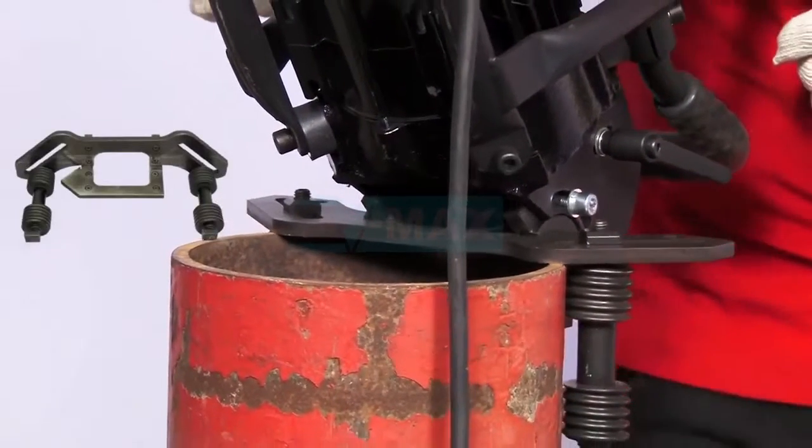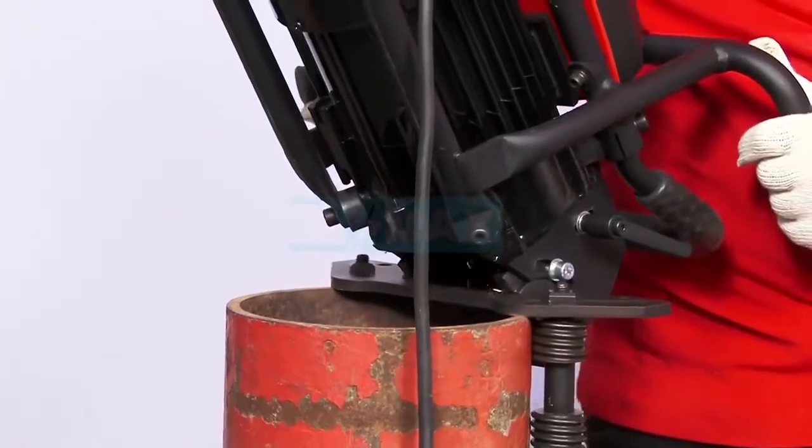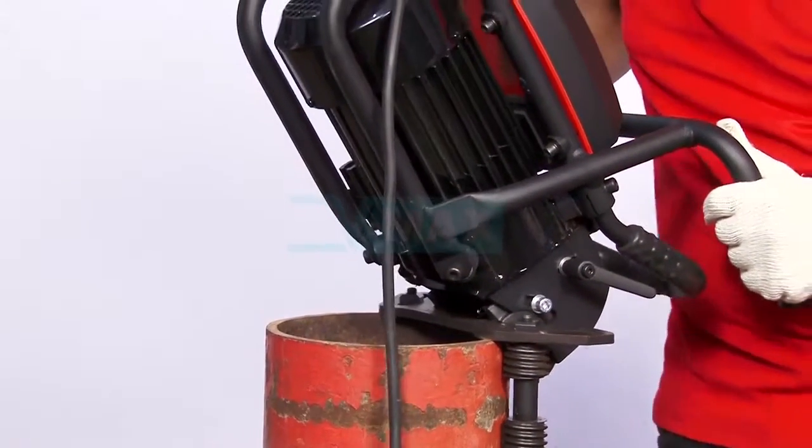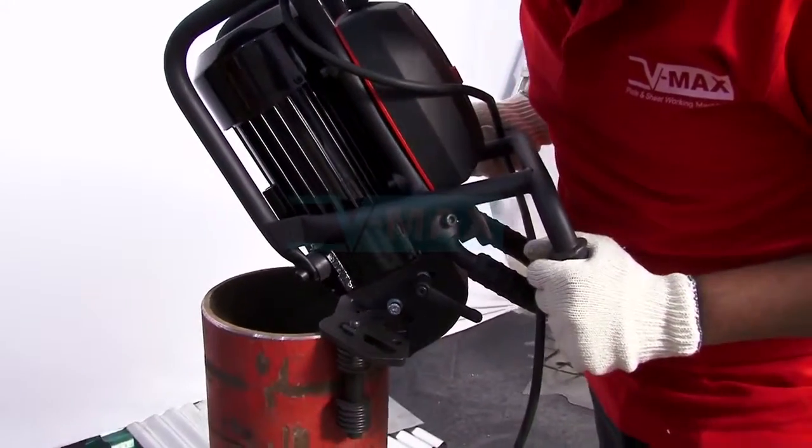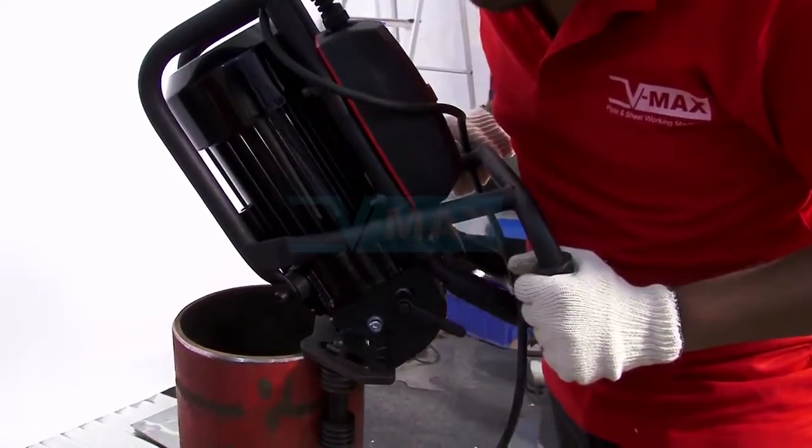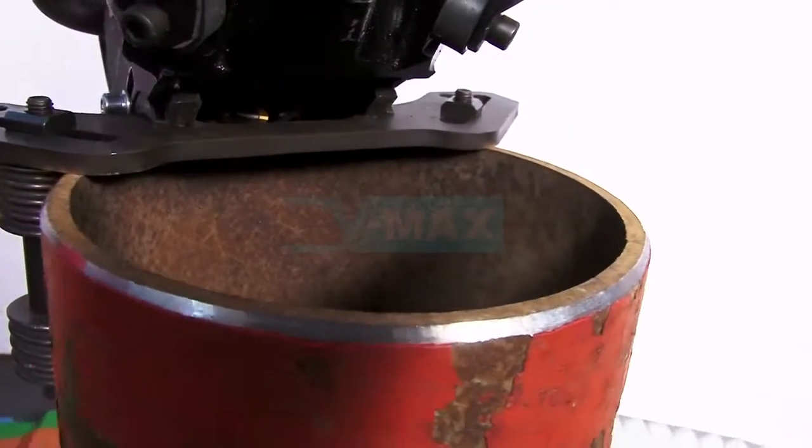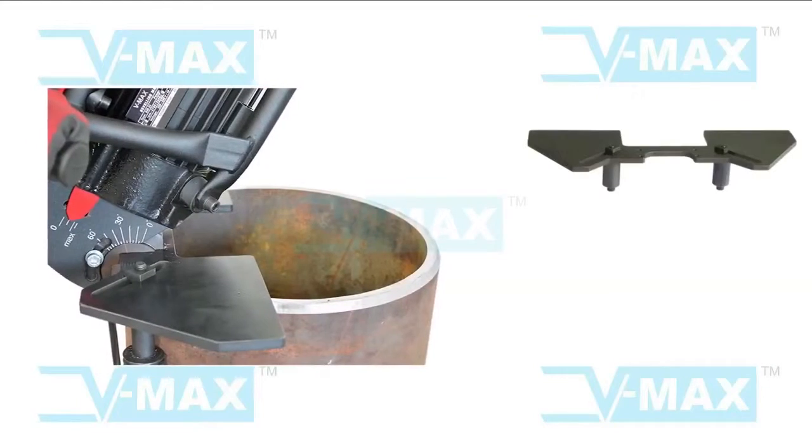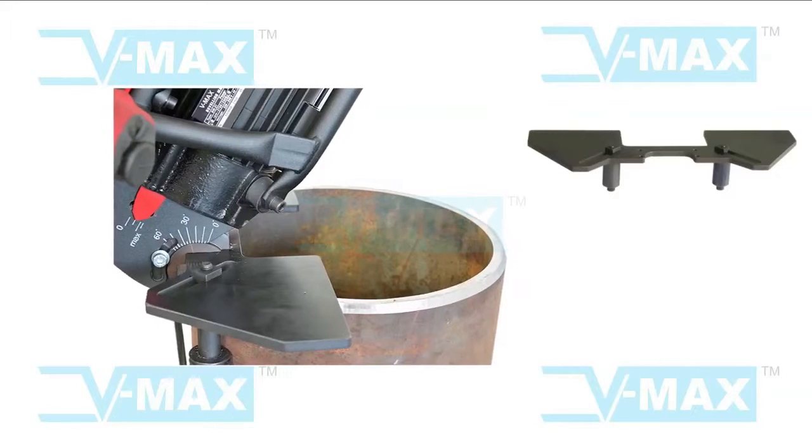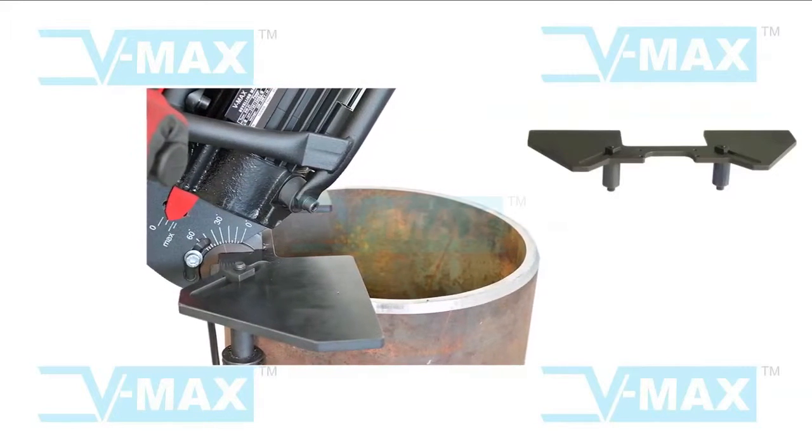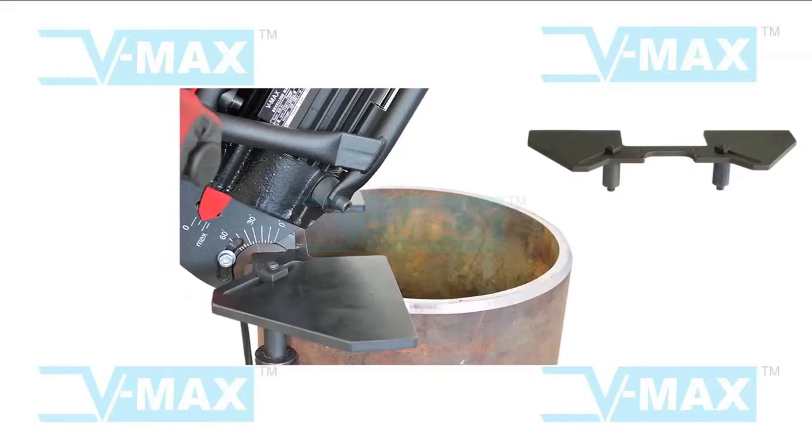The standard universal guide plate fitted on the machine can also be used for beveling pipes for diameter 150mm to 300mm, that is pipe 6 inch to 12 inch. An optional guide for beveling of pipe diameter from OD 260mm to OD 600mm, that is 10 inch to 24 inch, is also available.